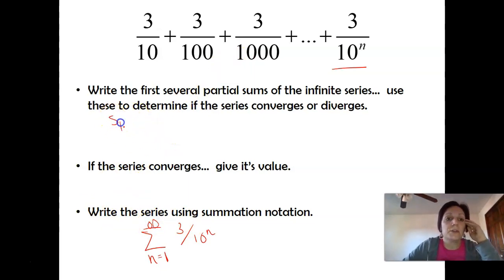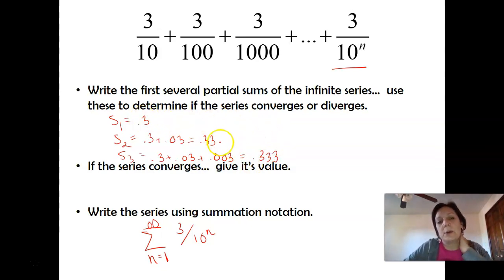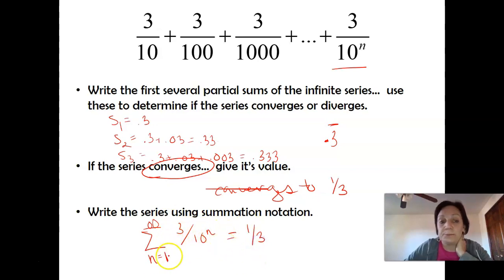Now, this one has interesting partial sums. If you notice your first partial sum is three tenths, I'm going to write it as a decimal, point three. Your second partial sum is three tenths plus three one hundredths, which comes out to point three three. Your third partial sum is three tenths plus three one hundredths plus three one thousandths, and that comes out to point three three three. So you probably don't have to do too many partial sums here to notice what's happening. Every time you add a term, you're adding a point three to the end. And this is eventually going to turn in, in its infinite form, to point three repeating. So this is the type of series that we can easily look at the partial sum and say, yes, this thing converges. It converges to one third. In other words, this whole thing that represents an infinite number of terms is exactly equal to one third.